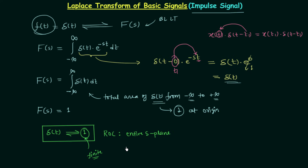For all values of σ the Laplace transform will exist, and hence the entire S-plane is the region of convergence. To summarize: for the unit impulse signal δ(t), its Laplace transform is equal to 1 and the region of convergence is the entire S-plane.